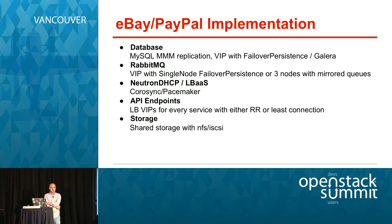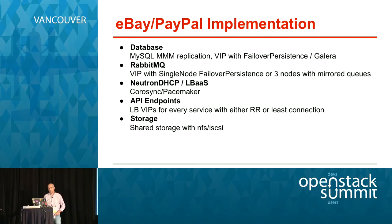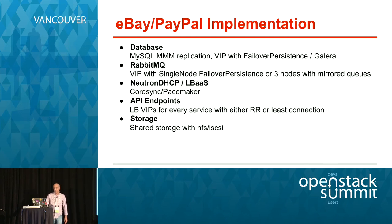For Neutron DHCP and LBaaS, we use Corosync and Pacemaker. For endpoints, we have VIPs for every service with either round robin or persistent connection. We use three controller nodes for OpenStack services. For storage, we use shared storage with NFS and iSCSI.